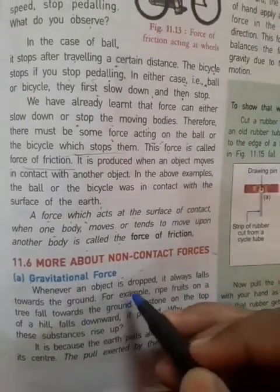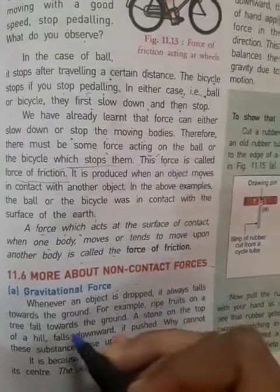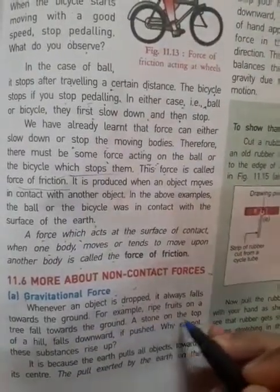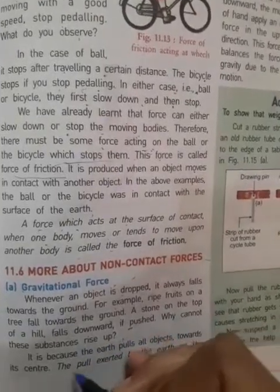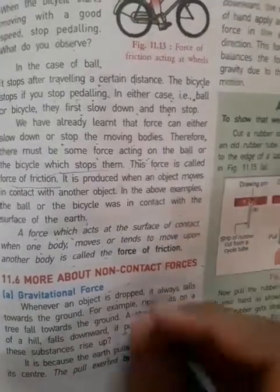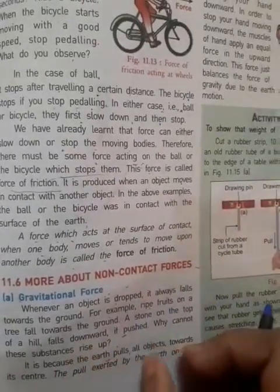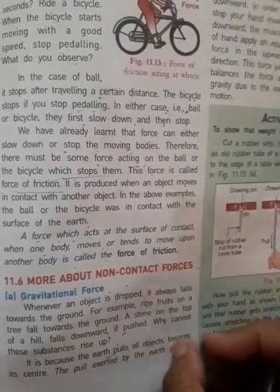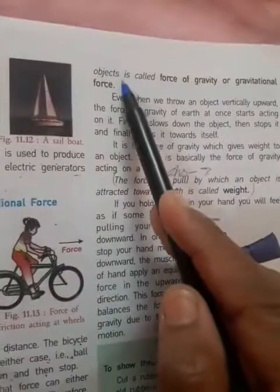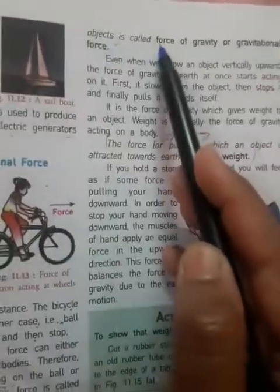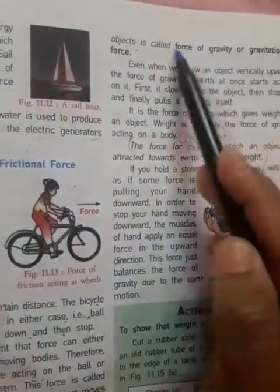For example, ripe fruits on a tree fall towards the ground, and a stone on the top of a hill falls downward if pushed. Why cannot these objects rise up? It is because the earth pulls all objects towards its center due to gravity. The pull exerted by the earth on an object is called the force of gravity or gravitational force.